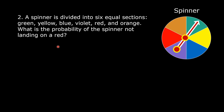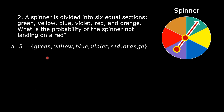First, we are going to find the probability of the spinner landing on red, and then we are going to find the probability of the spinner not landing on red. All the colors appearing on the spinner are all the outcomes in the sample space: green, yellow, blue, violet, red, orange. The outcome in the event of the spinner landing on red is red.